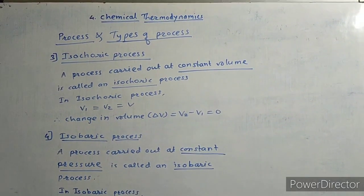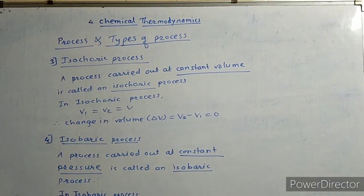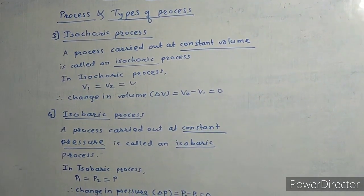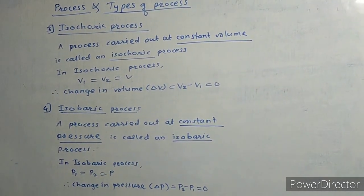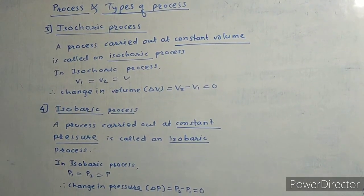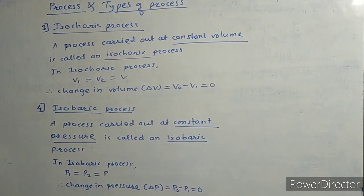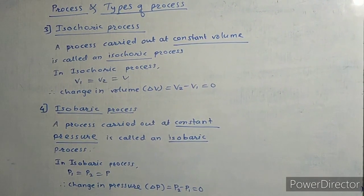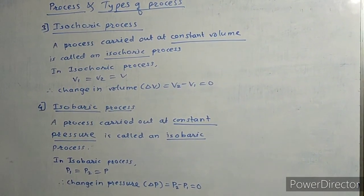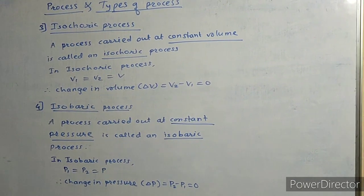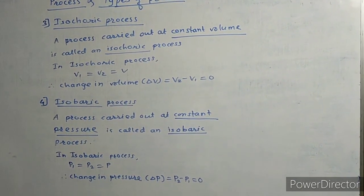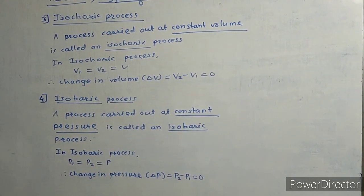The third type is the isochoric process. A process carried out at constant volume is called an isochoric process. In the isochoric process, V1 equals V2, so delta V equals V2 minus V1 equals zero.